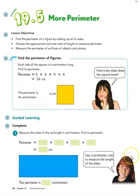So hopefully you remember from yesterday that perimeter just means the distance around the outside of a shape. We can find the perimeter of a figure by adding up all its sides. Another thing we're going to be able to do is choose the appropriate tool and units of length to measure perimeter. So we need to know what would we need to measure perimeter and what kind of unit would we use depending on how big the object is.